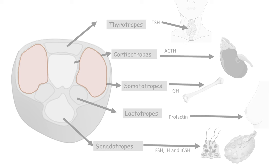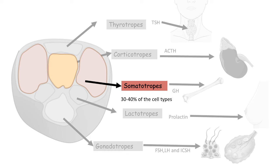Let's look at the relative abundance of these cell types. Somatotropes are the most abundant cell types in the anterior pituitary, comprising approximately 30–40% of the cells. About 20% of the cells are corticotropes secreting ACTH. Thyrotropes, lactotropes, and gonadotropes each comprise 5–10% of the other cell types present in the pituitary.